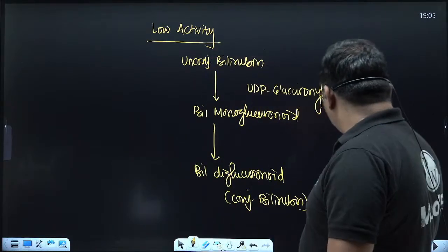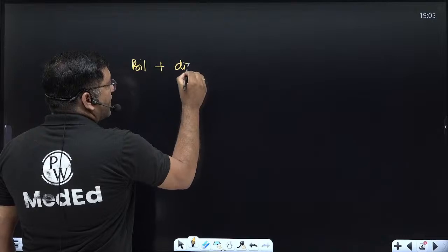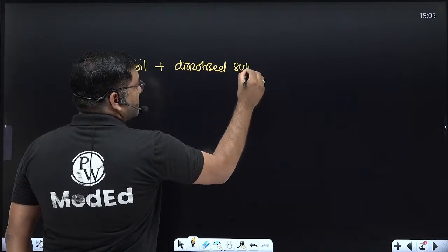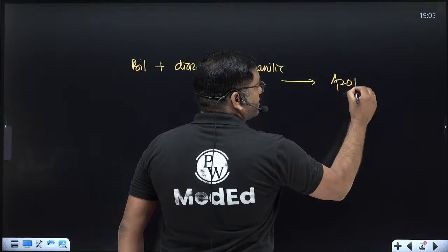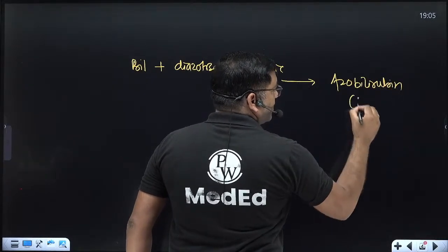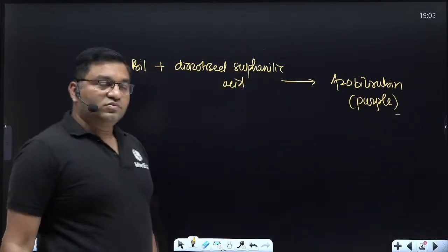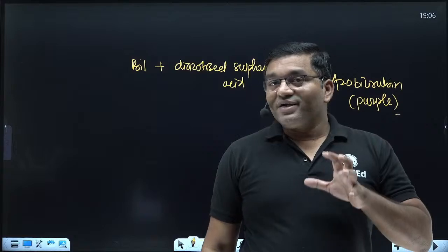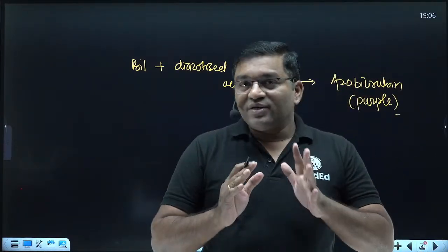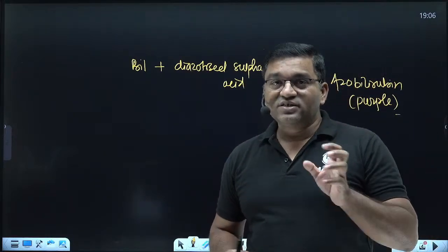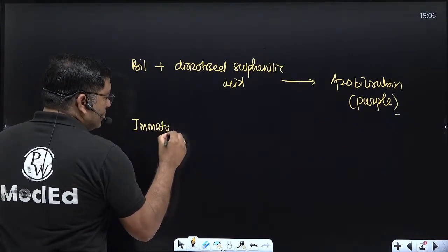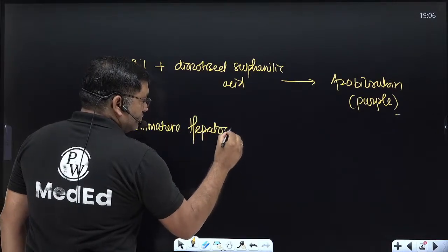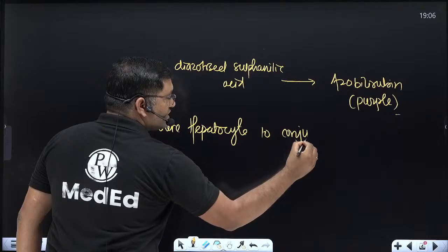The principle of bilirubin estimation, known as the Vandenberg reaction: bilirubin reacts with di-azotized sulfanilic acid to give azo bilirubin, which is a pink to purple color complex. An indirect positive Vandenberg reaction is a feature of hemolytic jaundice — that is, an increase in unconjugated bilirubin due to decreased capacity or immature hepatocytes to conjugate bilirubin.